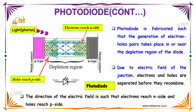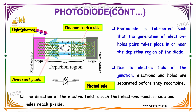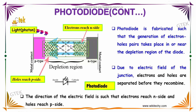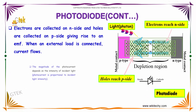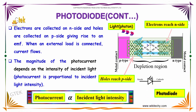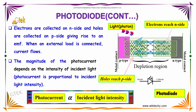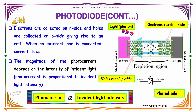You can see the holes reach the P side and electrons reach the N side once the photon or light is incident. The electrons are collected on the N side and holes are collected on the P side, giving rise to an EMF, and when an external load is connected, the electrons start flowing.